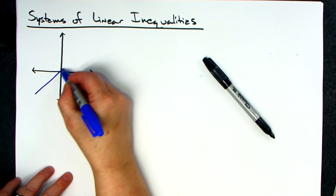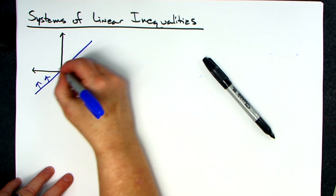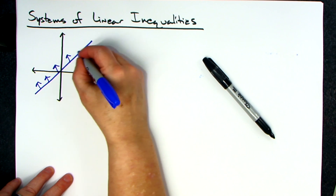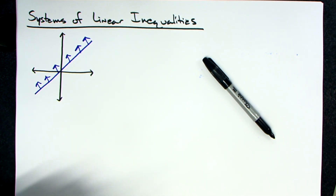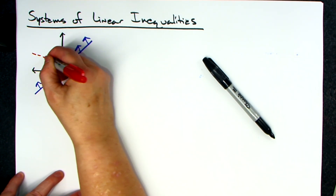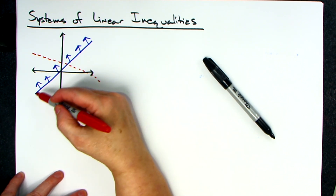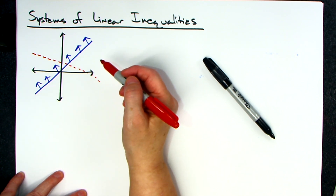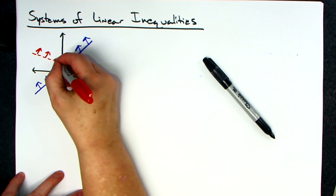Let's suppose we graph one line and it is a solid line and it says we're going to shade this way. When I go to the system I sometimes do the arrows because you get a lot of shading and it really starts to look cluttered. Then let's say you put your second line on — maybe it has an opposite slope and maybe it's dotted as opposed to solid. When you do a system you could have two solid lines, two dotted lines, or one of each.